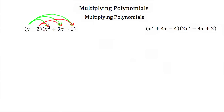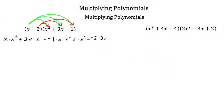So what we'll have is x times x squared, x times 3x, and x times negative 1. Then we'll have negative 2 times x squared, negative 2 times 3x, and negative 2 times negative 1.